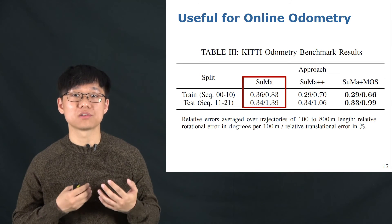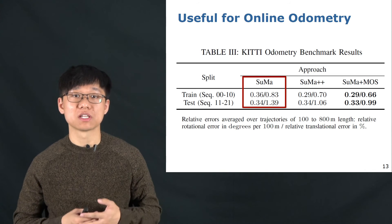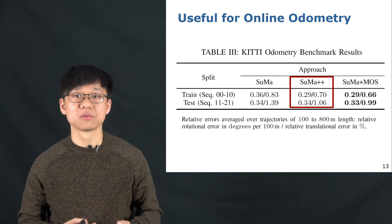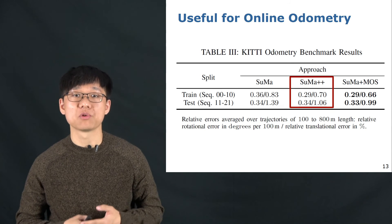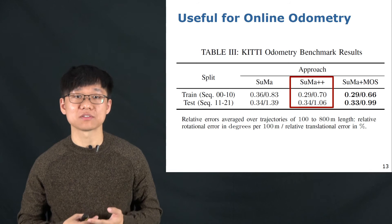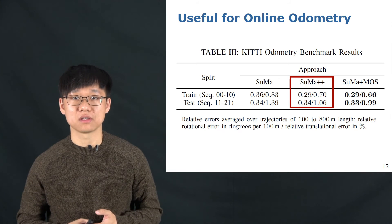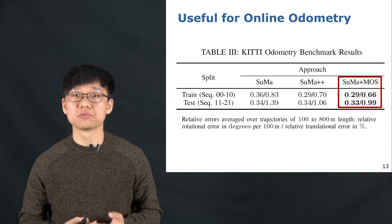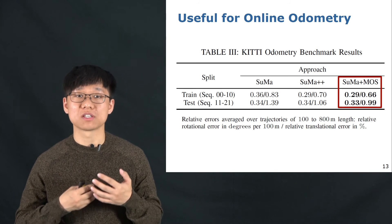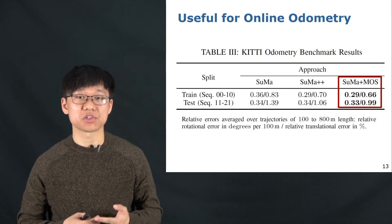Zuma is a traditional LiDAR SLAM method which uses only geometric information. Zuma++ is a semantic SLAM we proposed previously which exploits semantic consistency to improve the LiDAR odometry. ZumaMOS is the one we combined with the proposed moving object segmentation and the traditional SLAM.